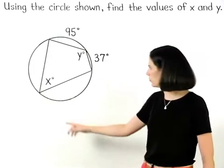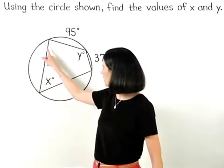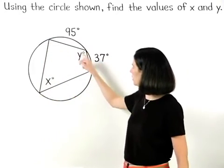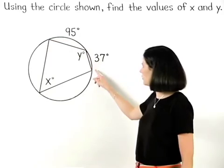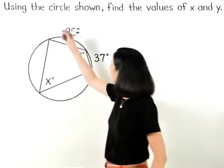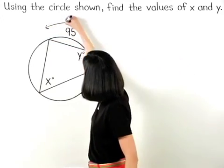Notice that x represents the measure of an inscribed angle, so we know that it equals half the measure of the intercepted arc, which is the arc shown here.